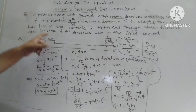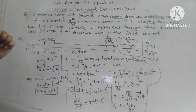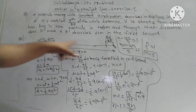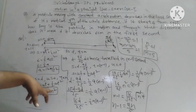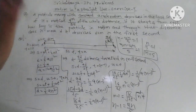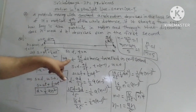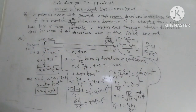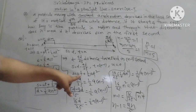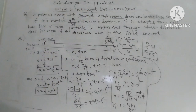The acceleration of the particle is 12 metres per second squared. The total time N is equal to 5 seconds. Now to find the total distance D, using D = ½ × a × N², with a = 12 and N = 5.